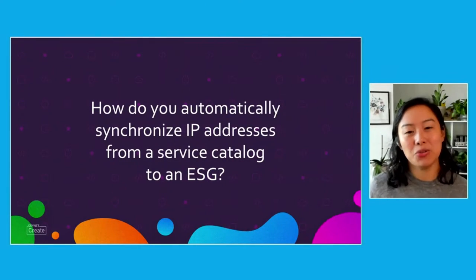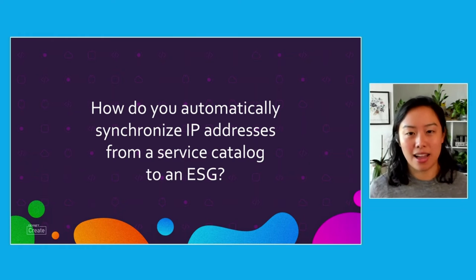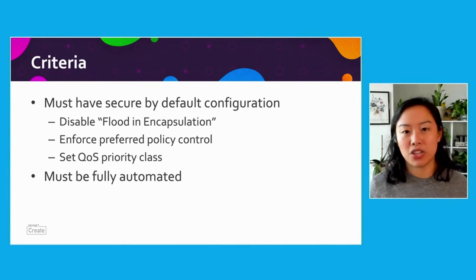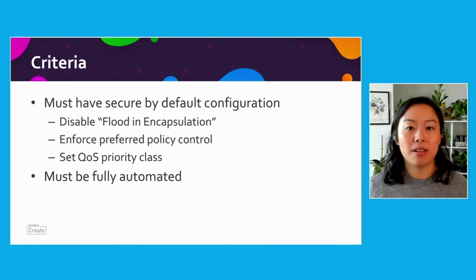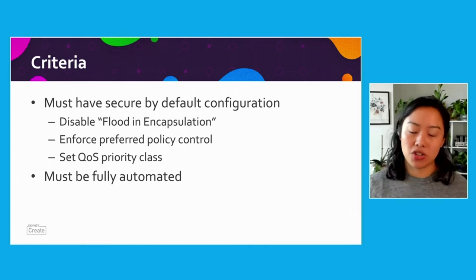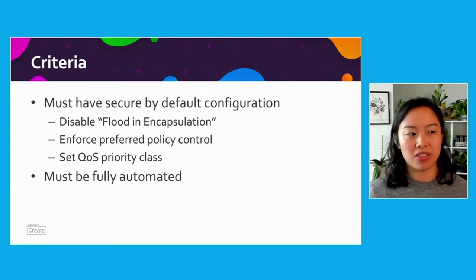Today I'm going to answer the question in about five minutes: how do you automatically synchronize your IP addresses from a service catalog to an endpoint security group and remove this manual worry? That way you can avoid saying oops, I forgot to add the security group. More importantly, I'm going to answer how you get a secure by default configuration when you do this automation — how do you make sure someone didn't accidentally inject a misconfiguration into that security group?